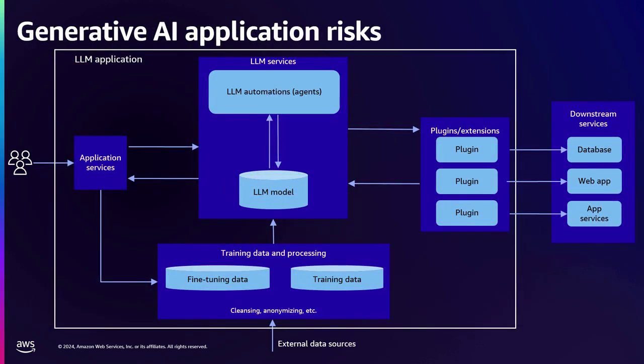Let's go through a typical architecture of a large language model-based application. On the left, we have a consumer interacting with an application interface — it could be a chatbot or an email application plugin. This application service interacts with your language model, which could be based on agents or a direct invoke call. Your model is trained on a huge amount of data or fine-tuned on domain-specific data, and on the right there are plugins that your model or application may orchestrate to call downstream systems to collect data or execute actions.